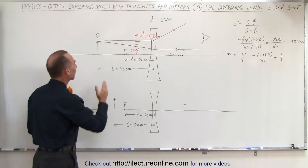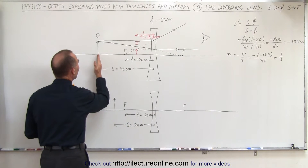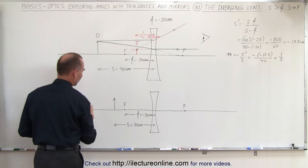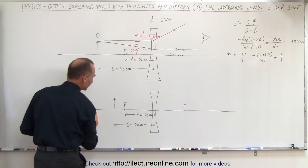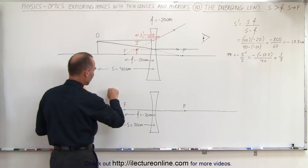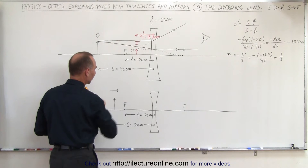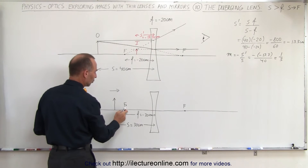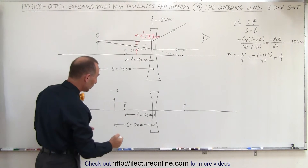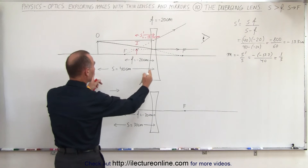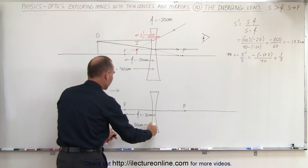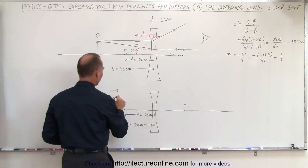Now, instead of moving the object farther away from the focal point, we're going to move the object towards the focal point — in this direction. Where will the image be now? Notice that from a distance of 40 centimeters, we now reduce it to a distance of 30 centimeters.